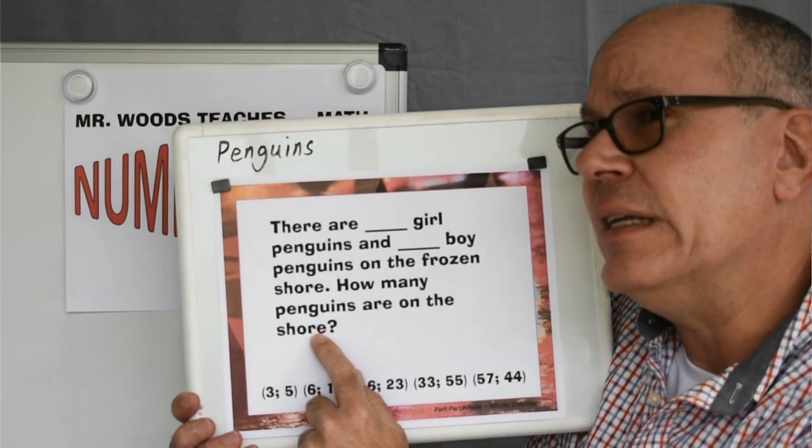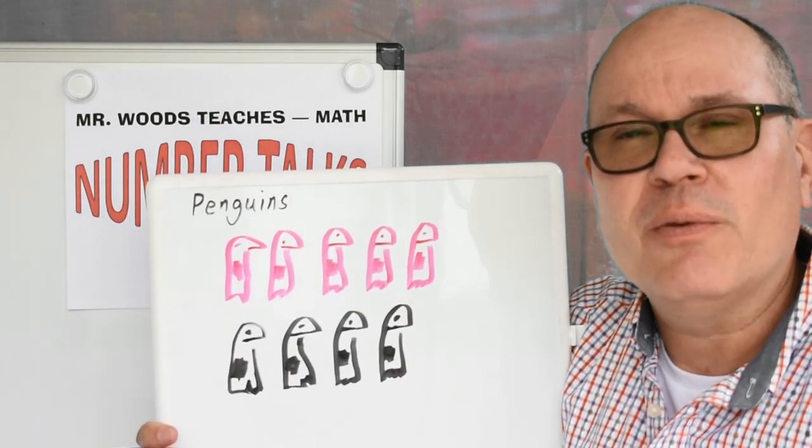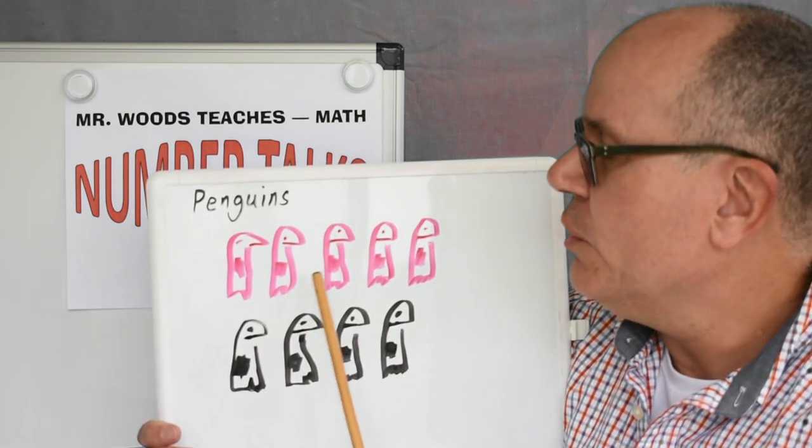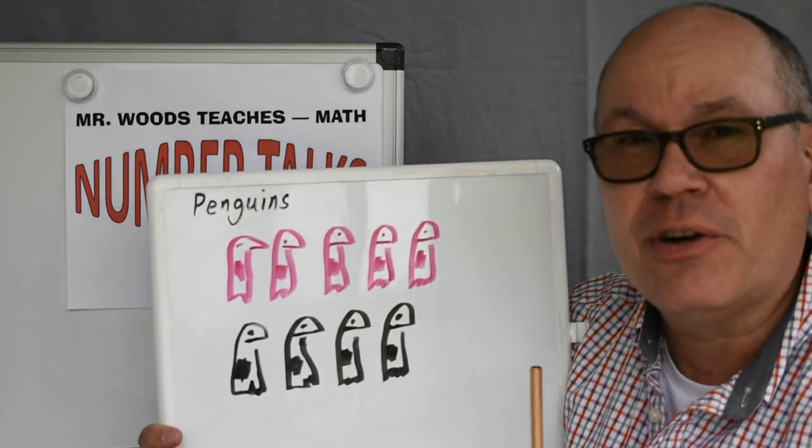I'm going to try something here. I drew some pictures. Remember, we had five girl penguins and four boy penguins. Count with me. One, two, three, four, five girl penguins.